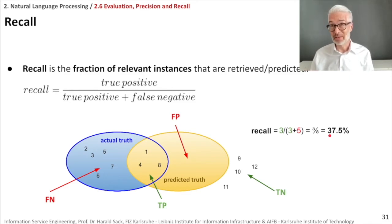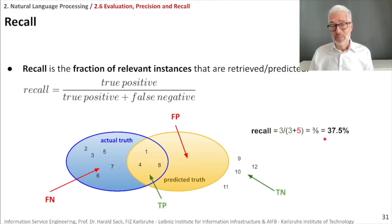To determine completeness, we look at the fraction of relevant instances that have been retrieved — the recall. We take the true positives and divide by all actual truths: true positives plus false negatives. So this is three divided by three plus five, which equals eight, computing to 37.5%. The recall is pretty small — lower than 50% — so probably we should think of something more sophisticated.